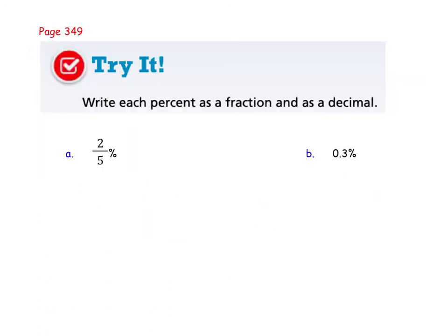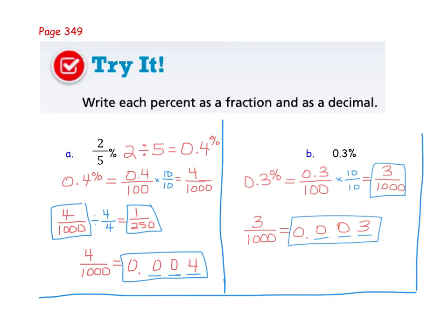Pause the video and complete the try it at the bottom of page 349, and then restart to check your work. Two-fifths percent changed into decimal form is 0.4 percent. That's the same as 0.4 over 100. Always get rid of the decimal in the numerator, so that means we have to multiply the top and bottom by 10. That gets us 4 over 1,000. If you like, you can simplify that fraction by dividing top and bottom by 4 to get 1 over 250. Either of our fraction forms are acceptable. If I have 4 one-thousandths, the 4 has to go in the third decimal place to the right of the decimal point. 3 tenths percent or 0.3 percent is the same as 0.3 over 100. Again, multiply by 10, you get 3 over 1,000. And that would be the same as 3 one-thousandths in decimal form.